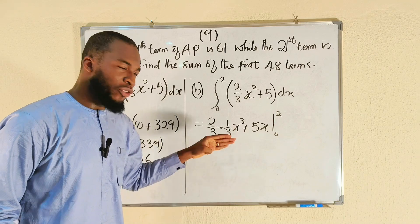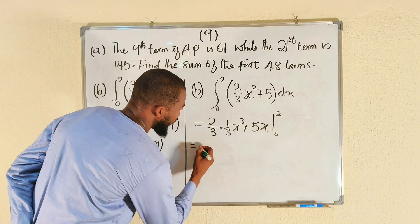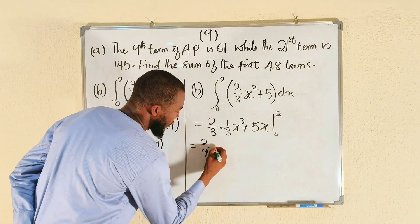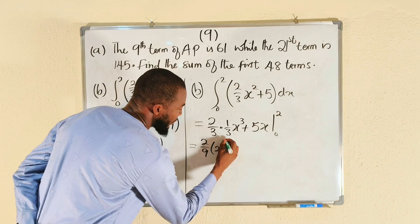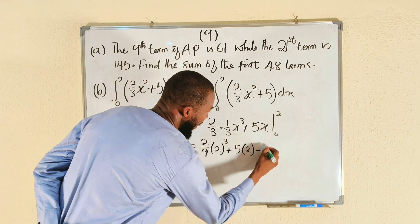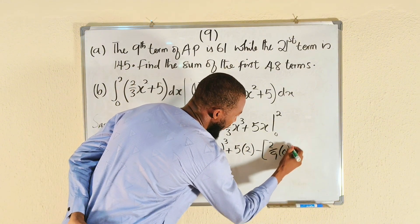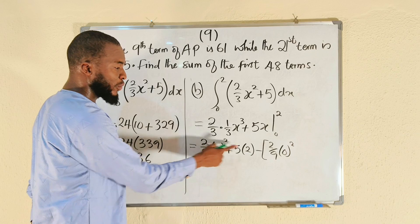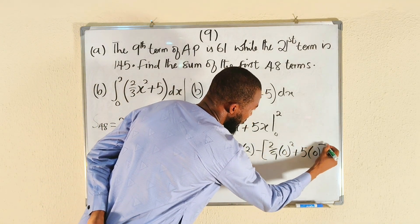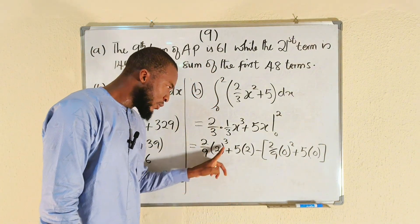So this is equal to 2 over 9, x is 2 to the power of 3, plus 5 times 2, minus the whole of 2 over 9 times 0 squared plus 5 multiplied by 0. The whole of this will give us 0, so let us pay attention to this one. This is 2 to the power 3, which is 8. 8 times 2 is 16, divided by 9, plus 10.